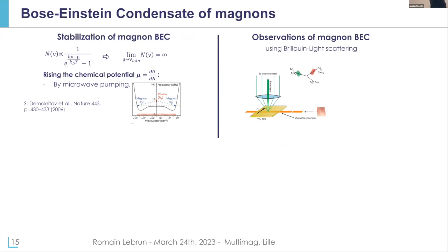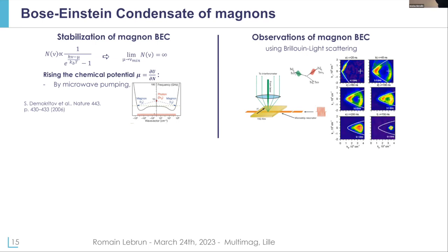They used Brillouin light scattering where you can detect the magnon population in k-space. Initially when you pump your magnetic system you see a broad distribution of magnons in k-space. Then if you wait a little bit for the magnons to interact, you see that the magnon population evolves as a function of time, and after about 700 nanoseconds you see that the magnons interact and you reach the Bose-Einstein condensate where all the magnons have the same k-vector and the same frequency.